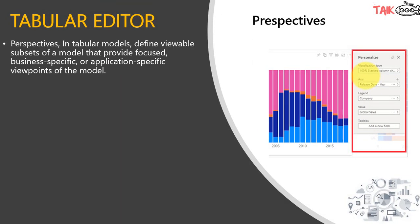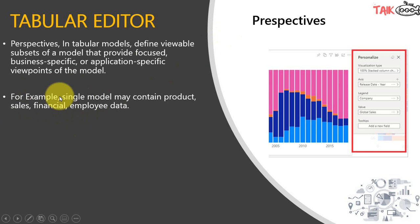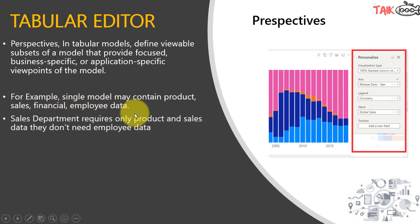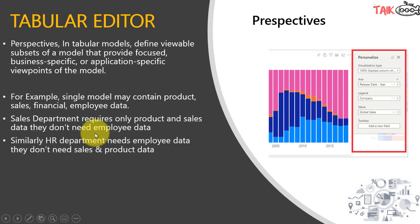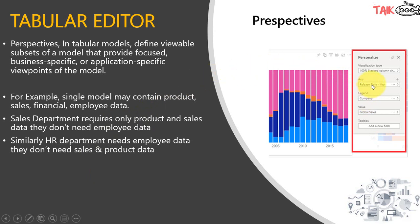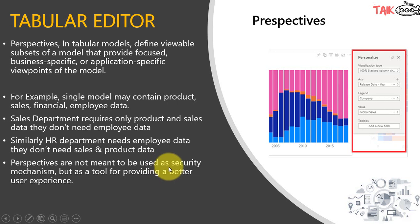Next are perspectives. Perspectives in a tabular model define a viewable subset of the model that provides a focused, business-specific or application-specific viewpoint. For example, a single model may contain product, sales, finance, and employee data. The sales department requires only product and sales information — they don't need employee or finance data. Similarly, the HR department needs only employee information and not sales data. In that case, you can create separate perspectives for sales and HR, so that when users personalize a visual, they see only the information relevant to their department. Importantly, perspectives are not meant to be used as a security mechanism, but as a tool for providing a better user experience.